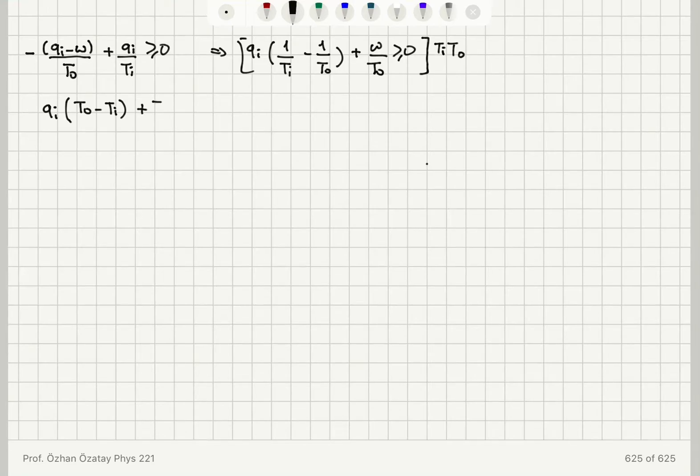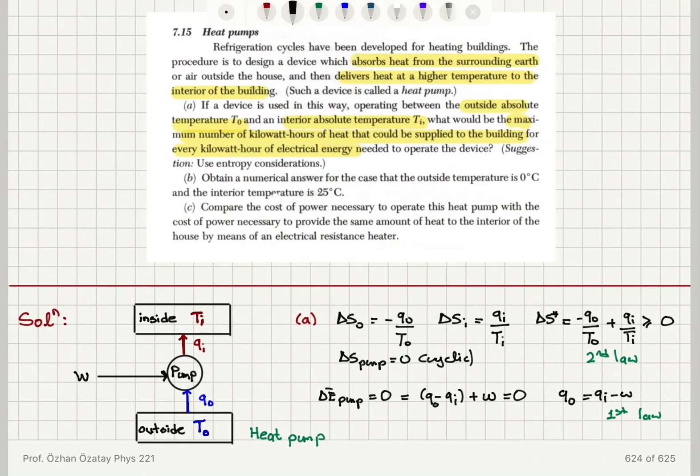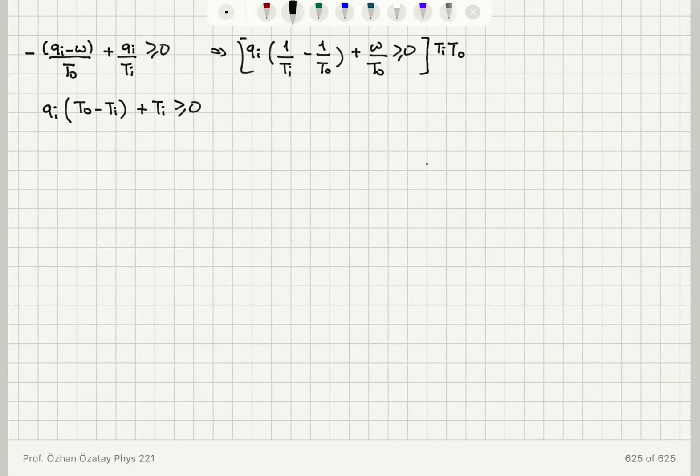Then I will have plus T in must be greater or equal to zero. I remember that T out is less than T in. So in order to make that positive, I will multiply this by minus one. Multiplying by minus one, the inequality sign changes. So this becomes Q I times T I minus T zero minus T I is less or equal to zero.